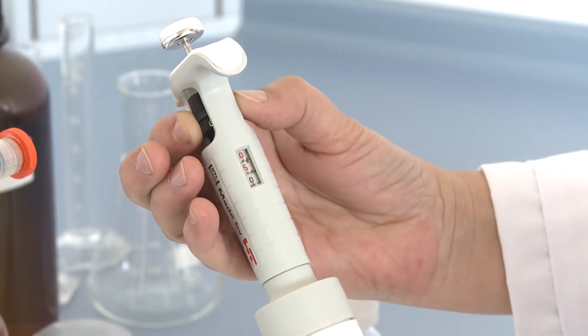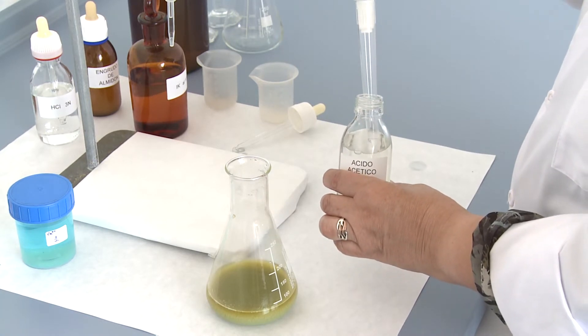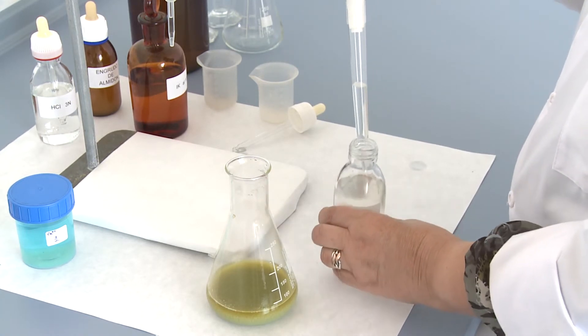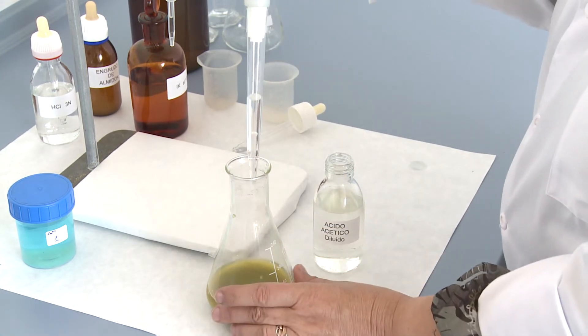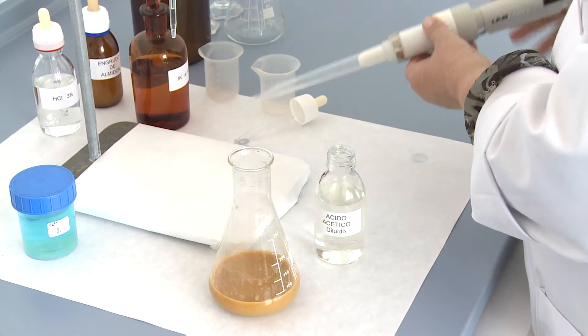It is then all diluted to about 50ml and then we start to titrate the free iodine with a solution of sodium thiosulfate until the solution takes a yellowish color.